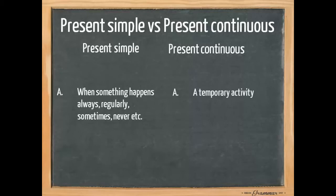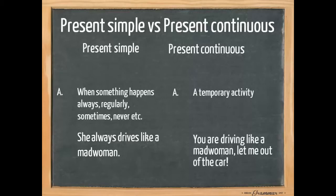We use a present continuous for temporary activity. An example of the present simple here is she always drives like a mad woman. An example of the present continuous here is you are driving like a mad woman, let me out, a temporary activity.